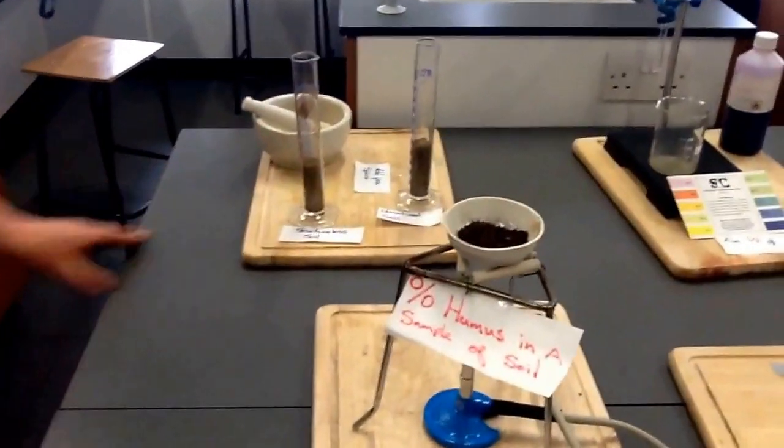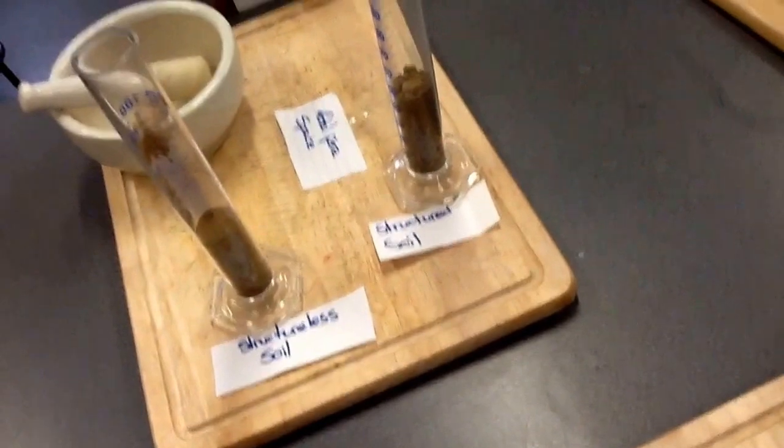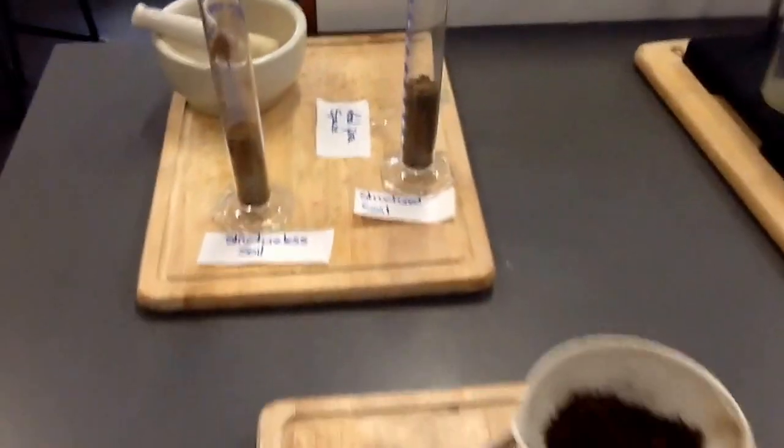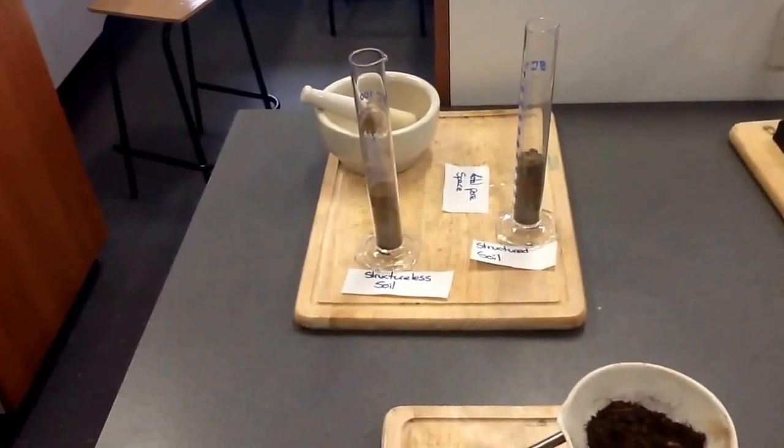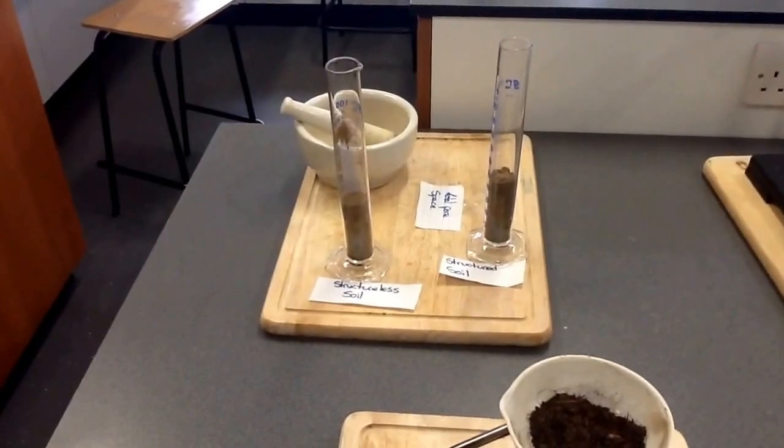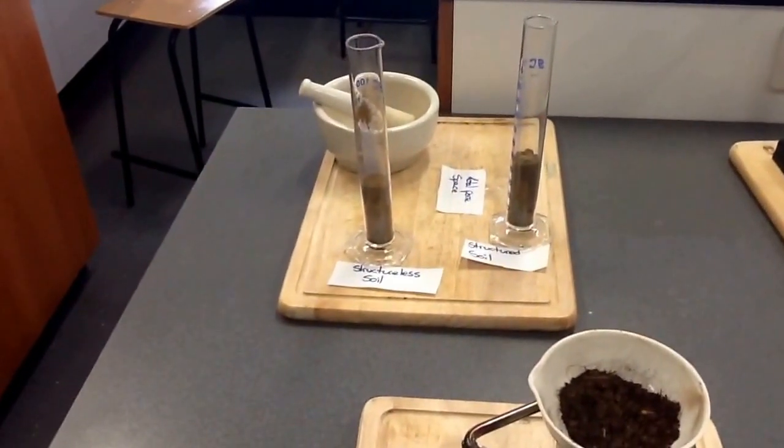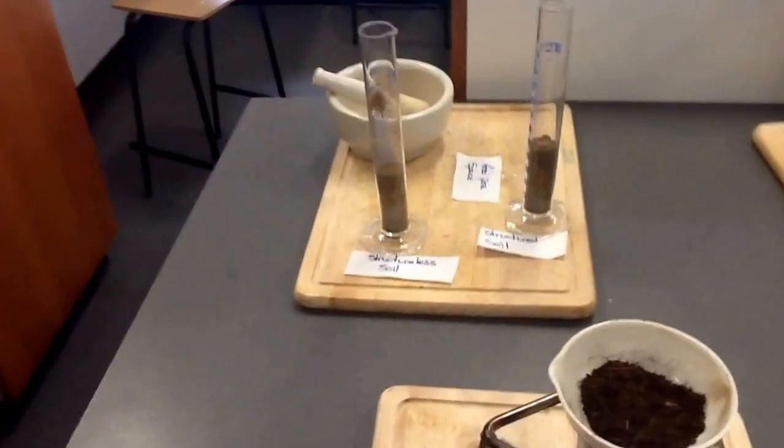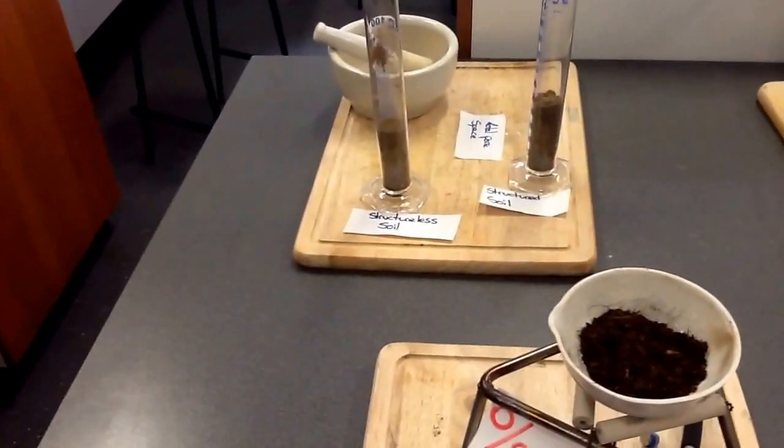The next one is the pore space of the soil. We get a sample of soil, we crush one of it with a pestle and mortar and we destroy the structure of that soil. So now it becomes an unstructured soil. Then we have a structured soil which has pore space in it and we get a beaker of water and pour to see what volume. We found then there's more air space in the structured soil. So that's better for aerating the soil.